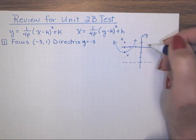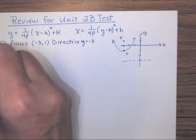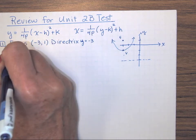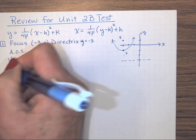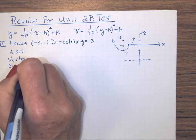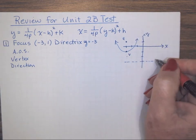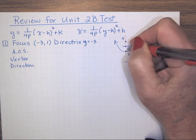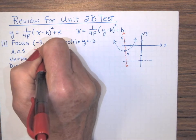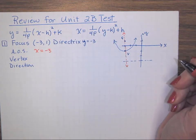We need to know where our vertex is to get our equation — we need our H and K values. If I count from the focus to the directrix, it's 4 units, so halfway in between is where our vertex would be. The focus is always inside the parabola, so it's opening up. If it opens up, then it's a Y equals equation. The axis of symmetry has to be a vertical line through our vertex: X equals negative 3.